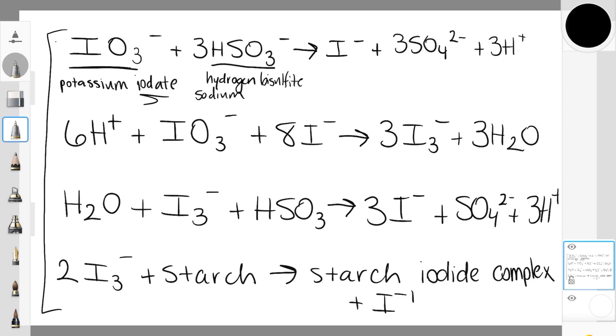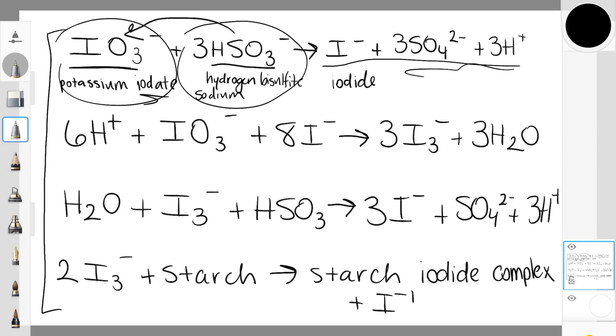So in the first stage of the reaction, the iodate and the bisulfite are reacting together to form the iodide anion, so iodide, plus some other byproducts. And what's occurring here is the HSO3 minus is reducing, so reducing the potassium iodate. Remember reduction oxidation reactions? If we're reducing something, it has gained an electron. So that means it stole an electron from the hydrogen bisulfite, or the sodium bisulfite. Stolen electron, the iodate anion gets reduced and becomes iodide.